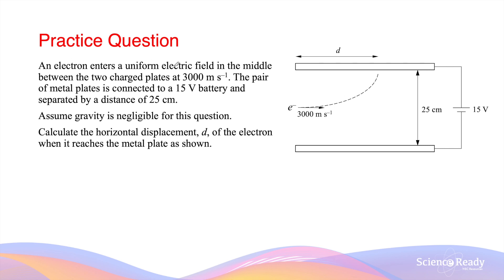An electron enters a uniform electric field in the middle between two charged plates at 3000 meters per second. So this is the initial velocity of the electron. The pair of metal plates is connected to a 15 volt battery and separated by a distance of 25 centimeters. Assume gravity is negligible for this question. Calculate the horizontal displacement d of the electron when it reaches the metal plate shown.